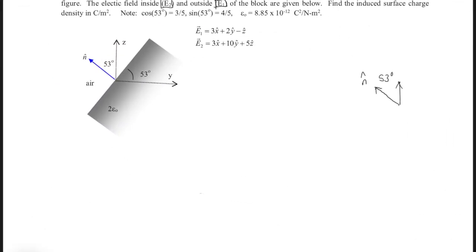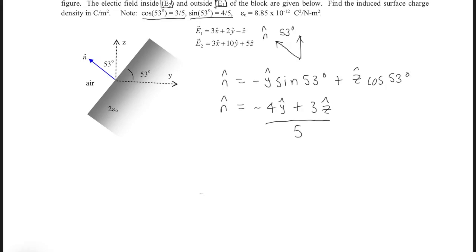So now that we know what our n̂ looks like with respect to the block, we can start this problem. First, we want to write out n̂. So we can write n̂ = -ŷ sin 53° + ẑ cos 53°. And we're using sine and cosine here to denote our y and z value. And what we can look for is what's given to us. So cos 53 is the value 3/5, and sin 53 is 4/5. So if we were to convert that from our cosine and sine, we'd get (-4ŷ + 3ẑ)/5. They're both over 5, so this would be our n̂ vector.